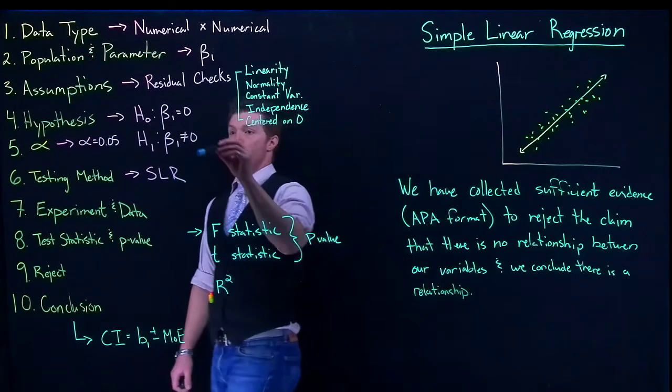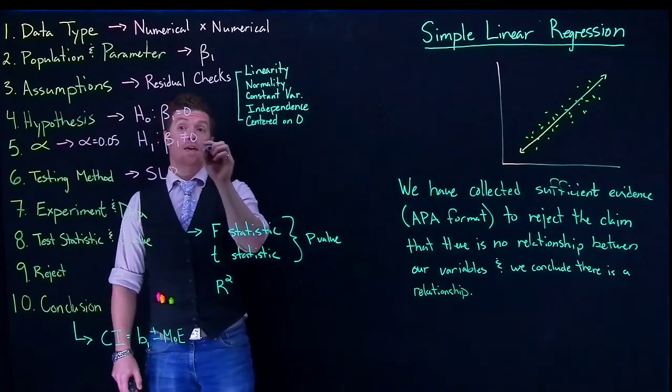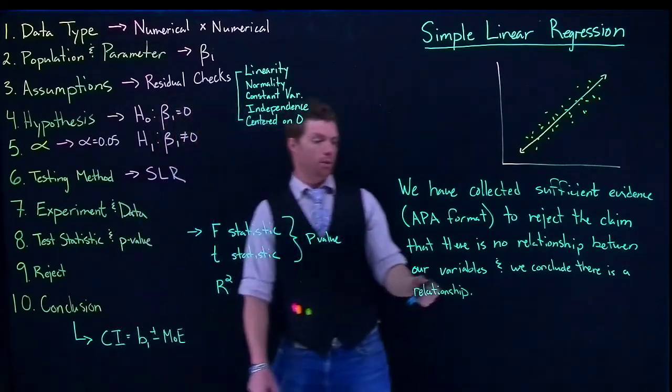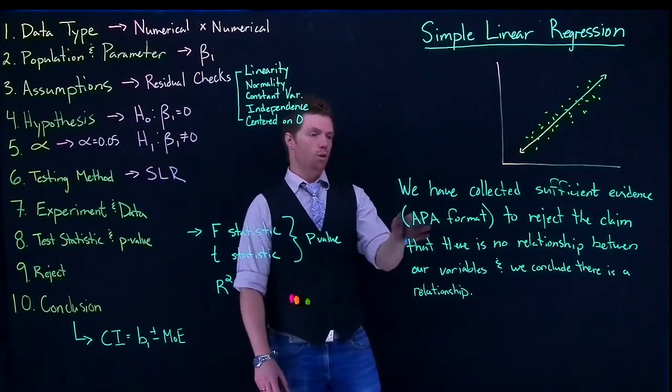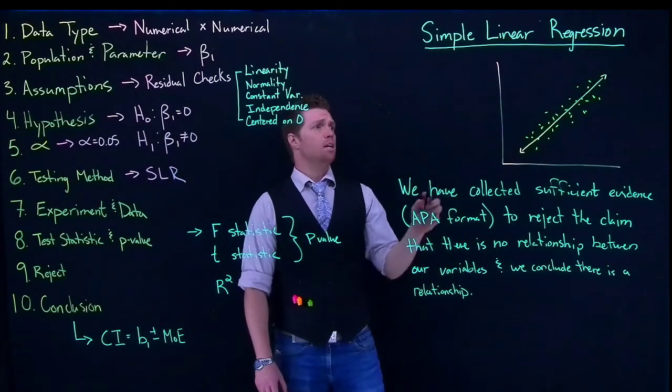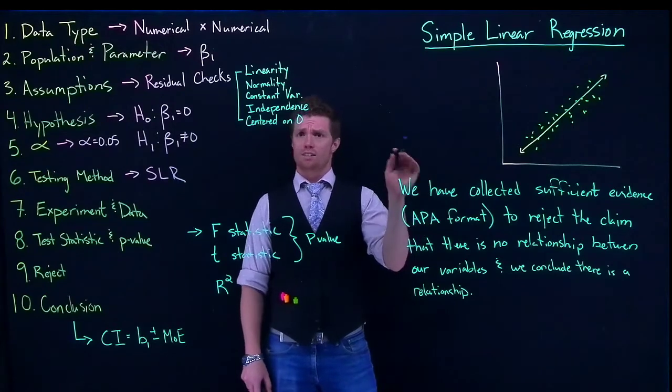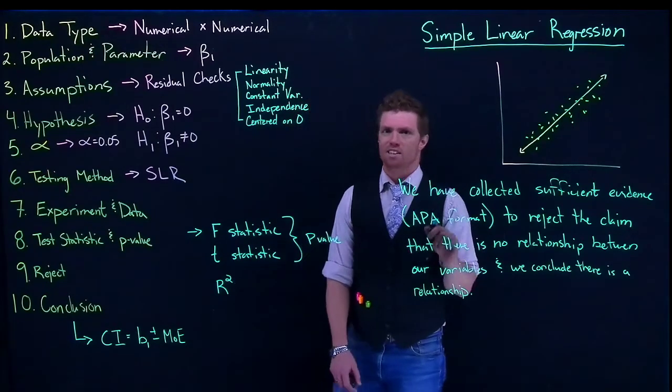So this is basically just coming down to here. Now, if we had done a one-tailed test, we could say that we conclude that there's a positive relationship or that there's a negative relationship, so we can go into a little bit more depth. Because we didn't have a super specific example here, I'm kind of writing this in generalities.